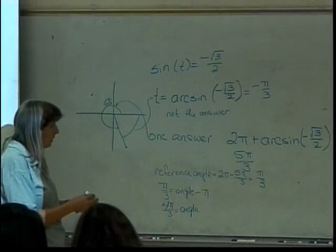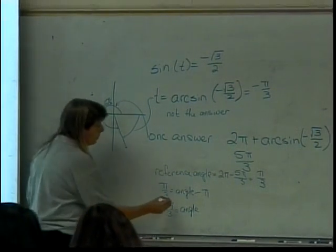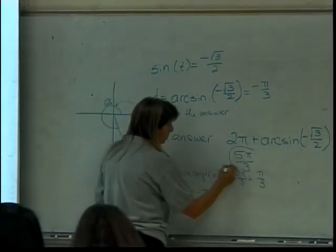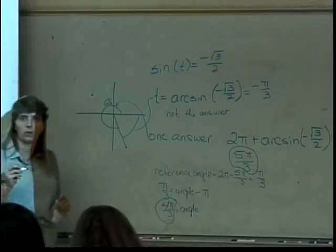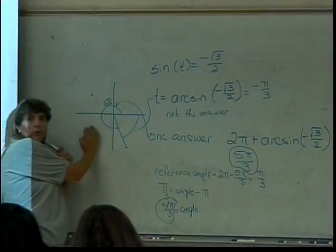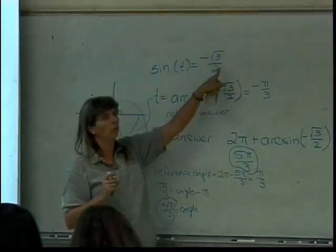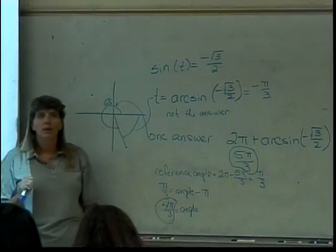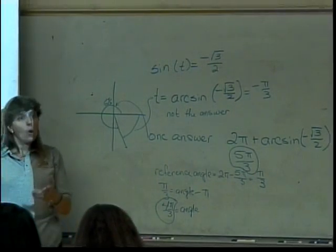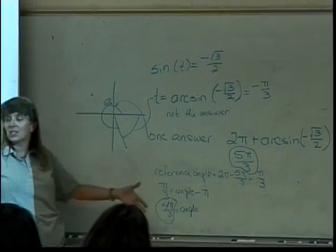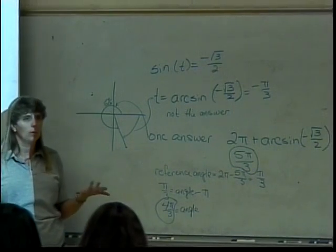What are our two answers to this problem? 4π over 3 is one of them. What's the other one? 5π over 3. Those are the two answers for this problem. That's the angle in quadrant 3 and the angle in quadrant 4 that has a sine value of negative square root of 3 over 2. Now, there are a whole bunch of others, aren't there? Just not between 0 and 2π. There's a whole bunch more.